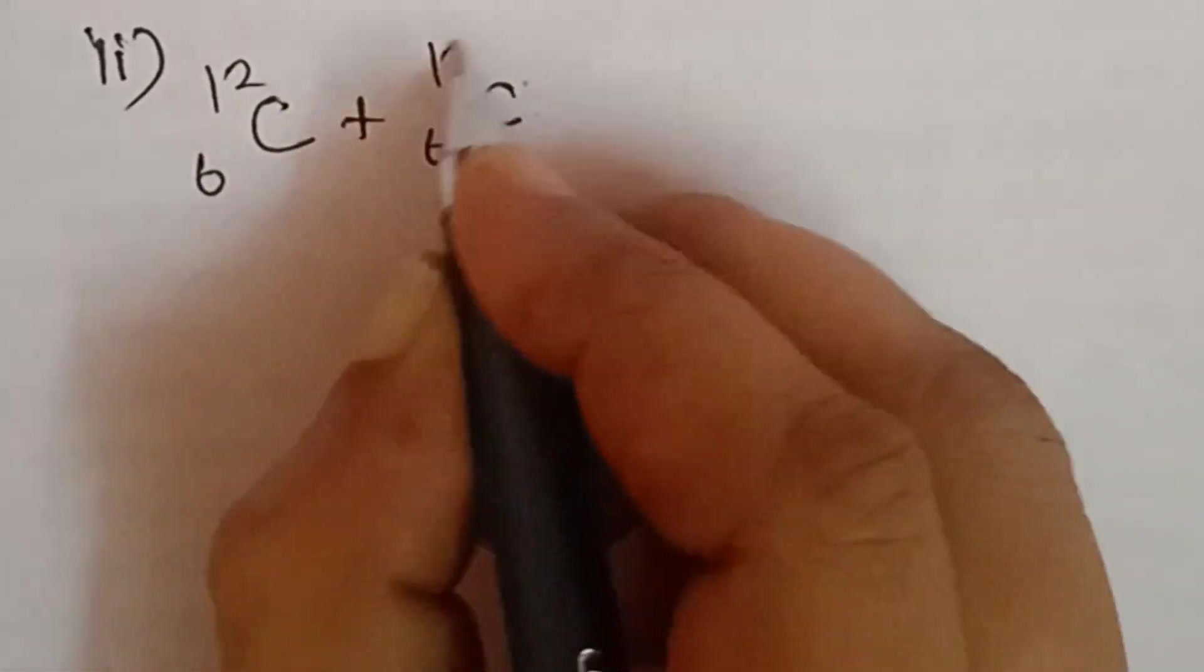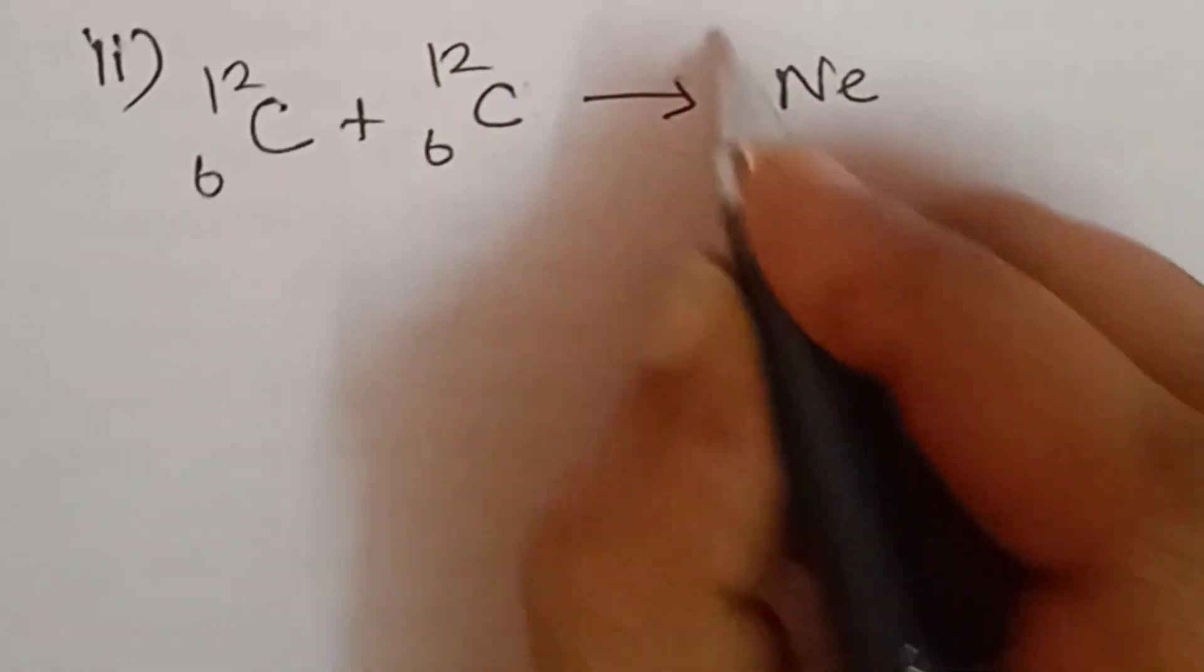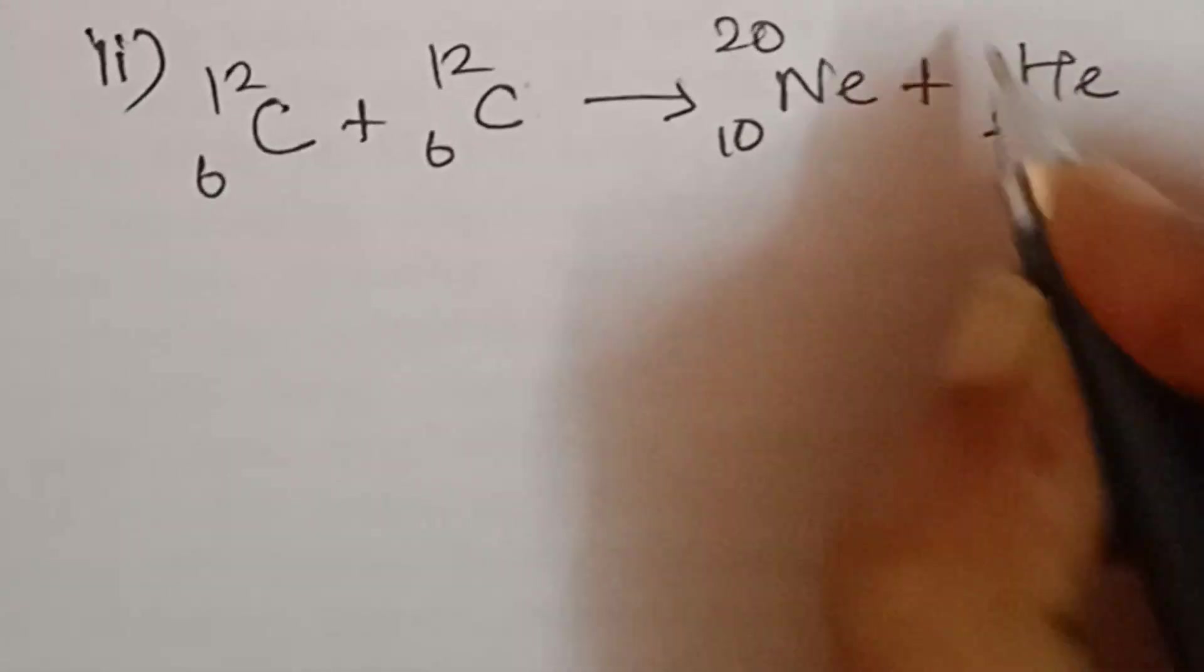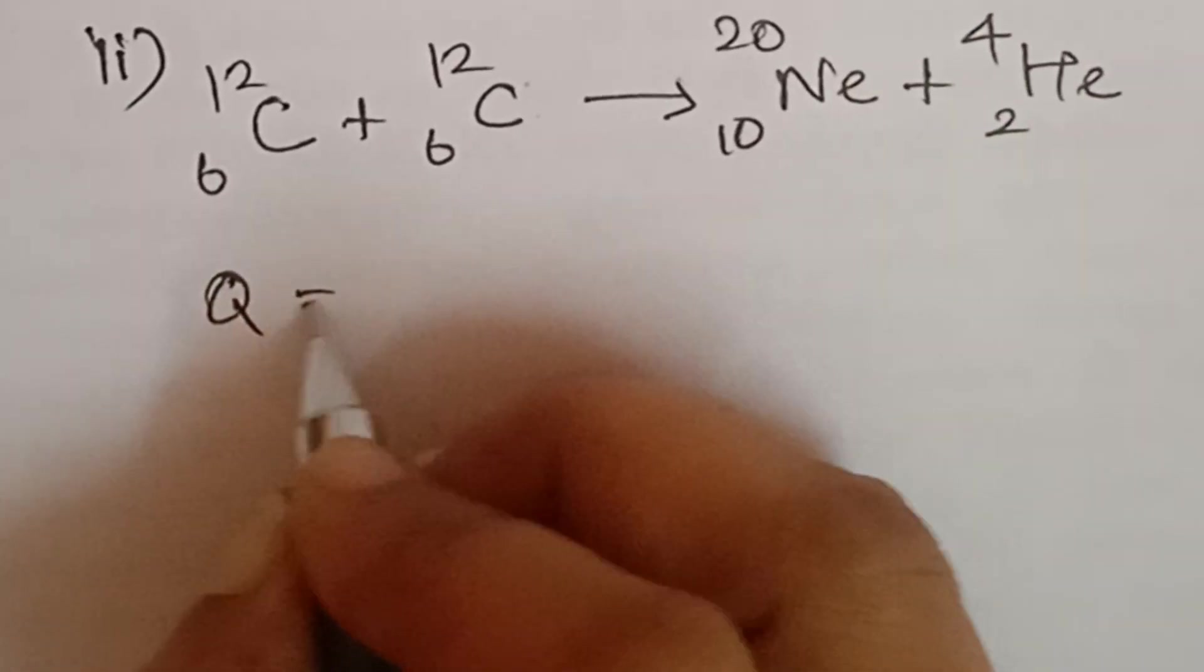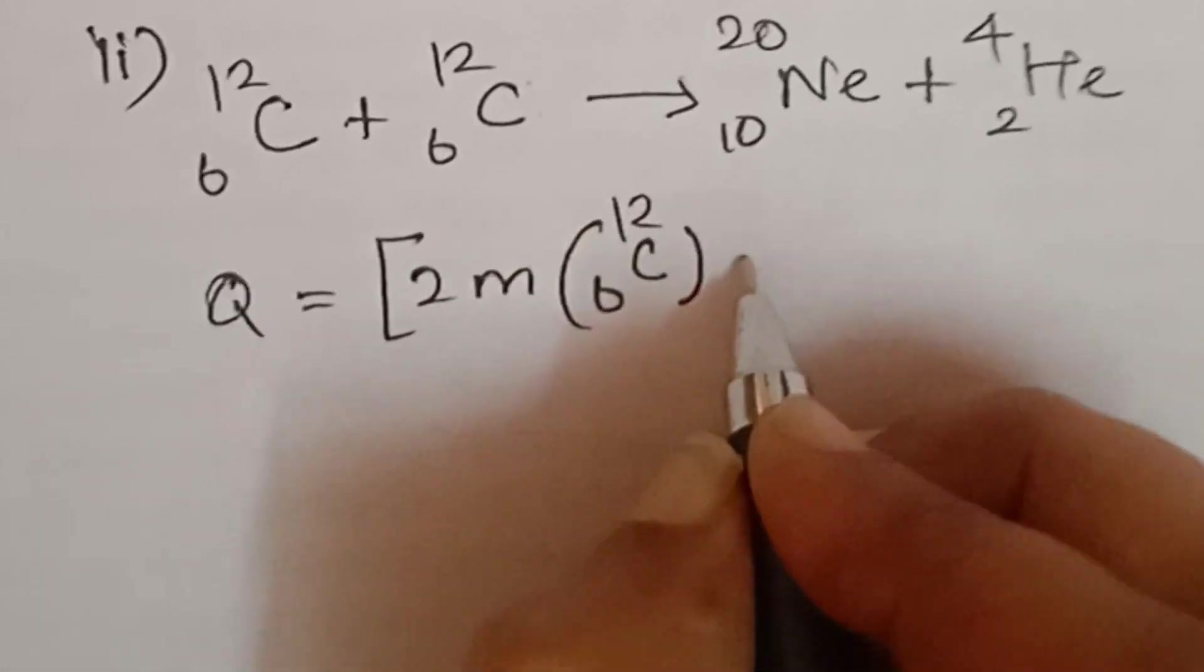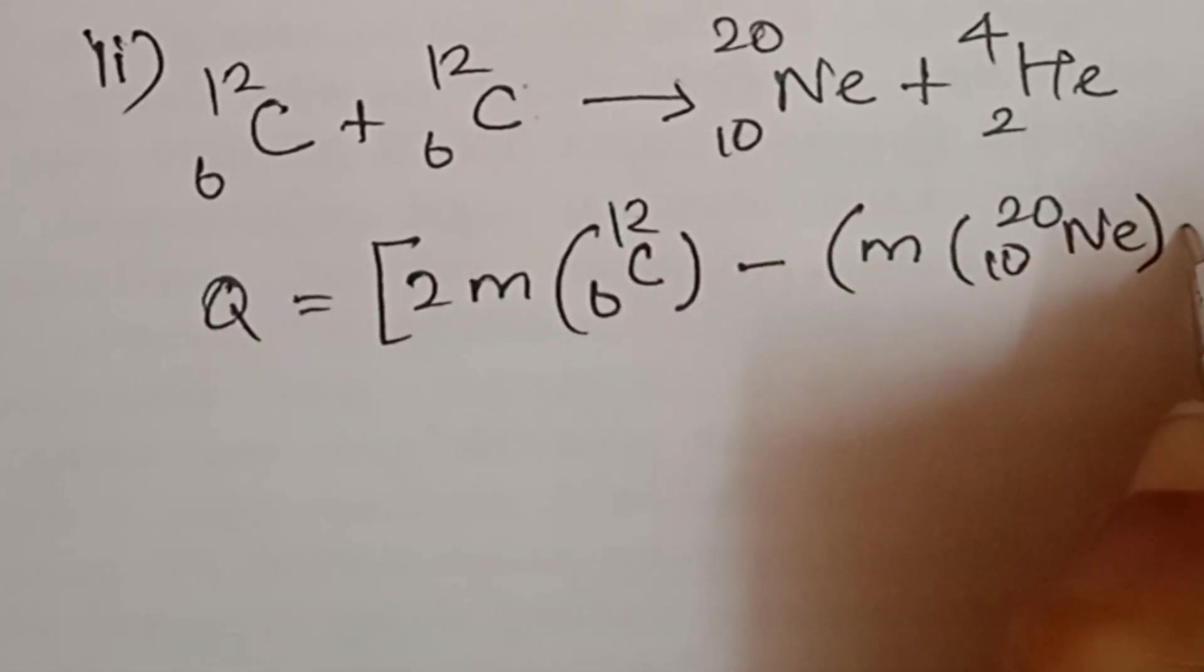For the second equation, C-6-12 plus C-6-12 gives neon-10-20 plus helium-2-4. Energy Q equals 2 into mass of C-6-12 minus mass of neon-10-20 minus mass of helium-2-4.